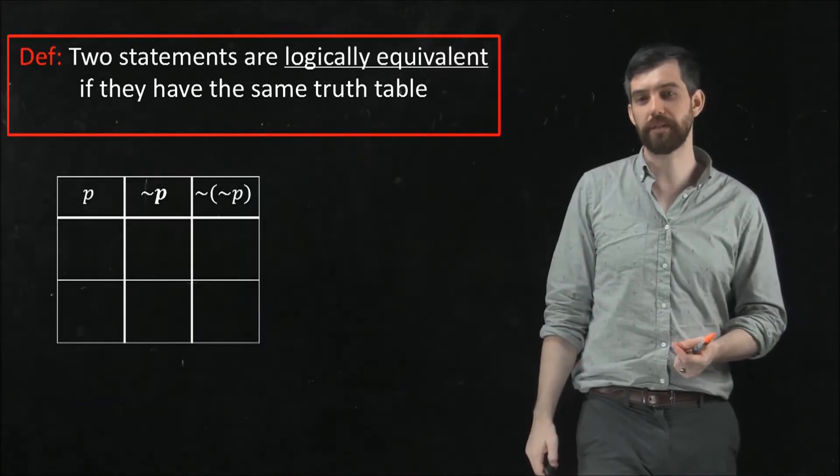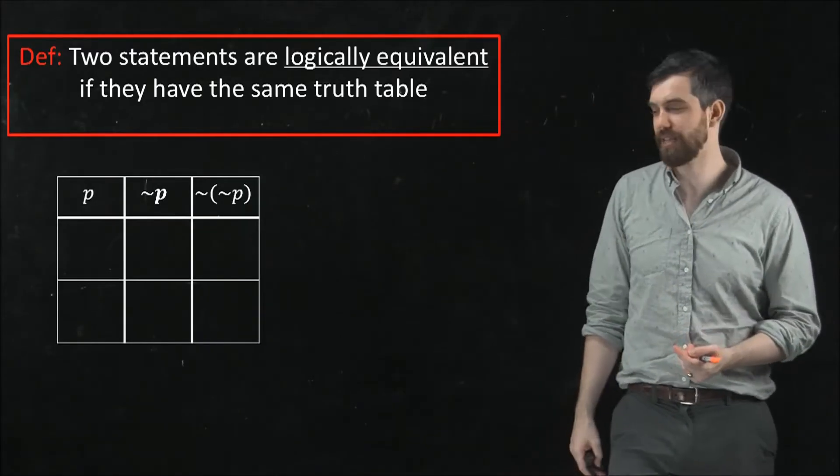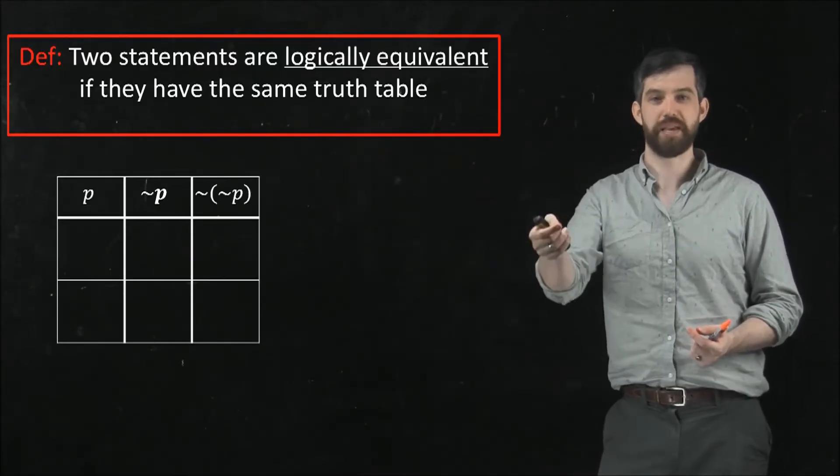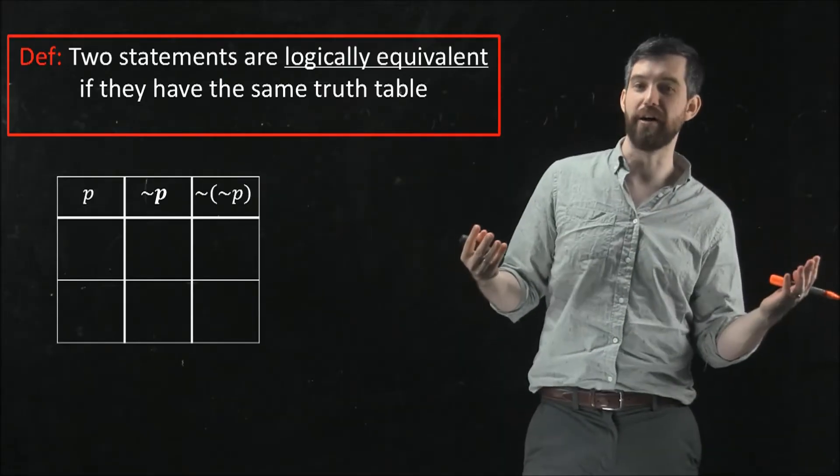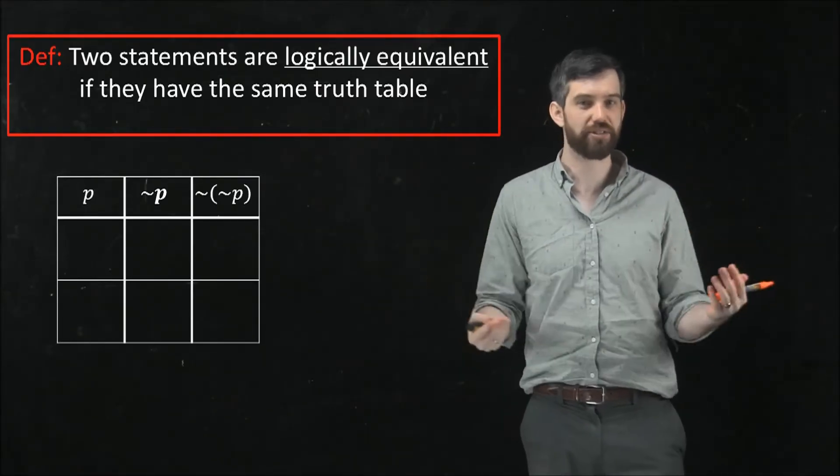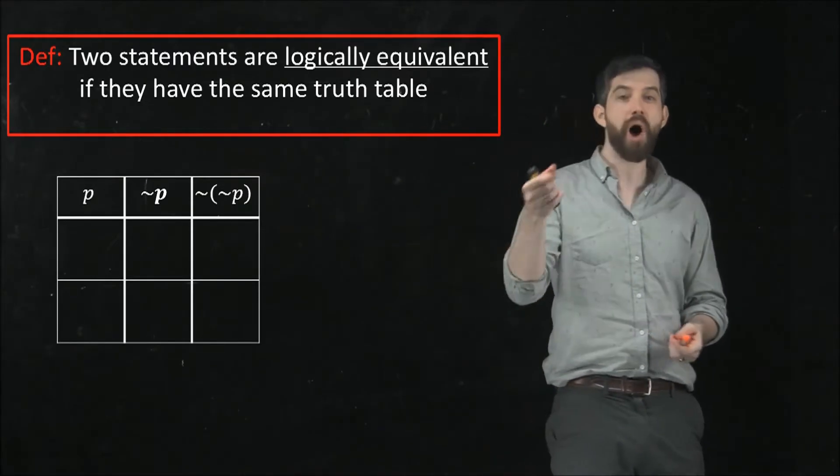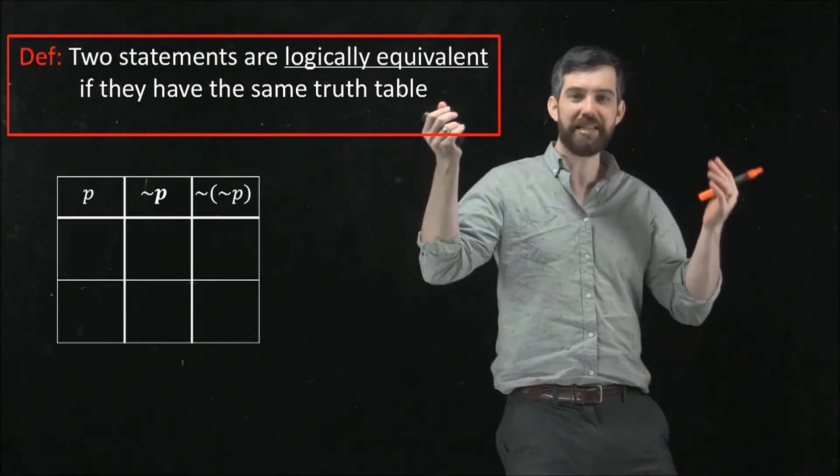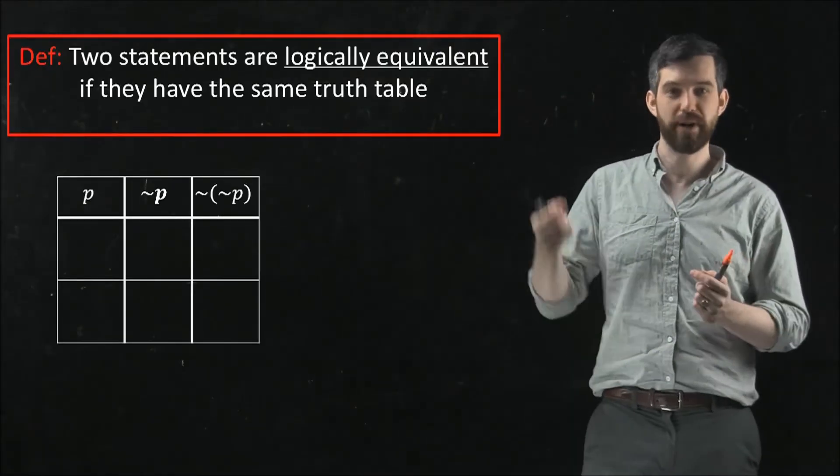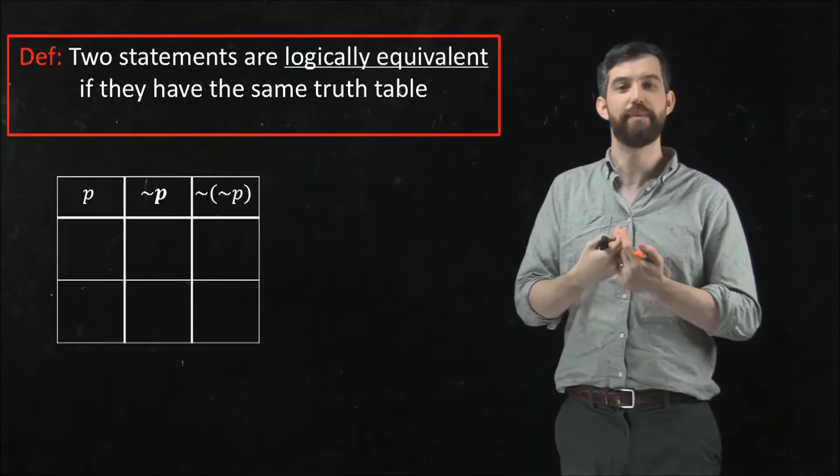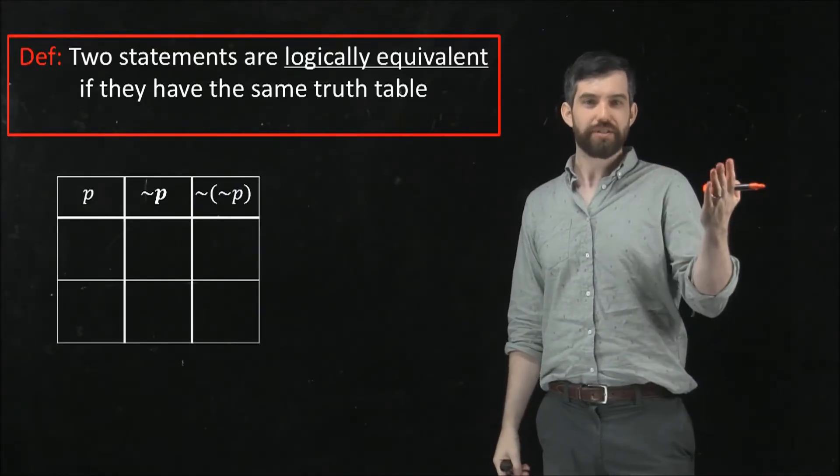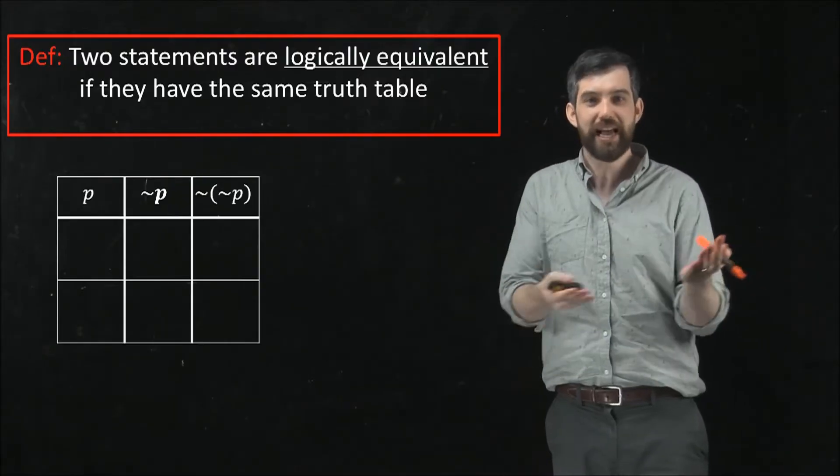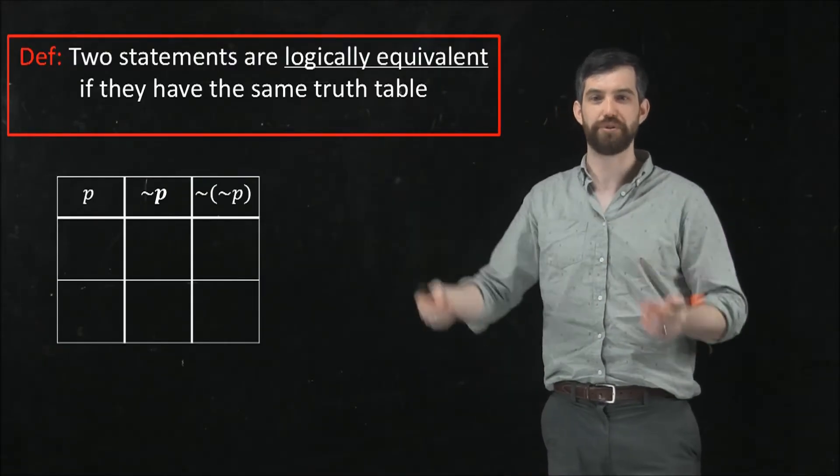Here's a simple example. I want you to look at the statement not not p. And we know that this idea of a double negative is that a double negative in English sort of cancels, right? If I say that I am not not hungry, then that's me saying that I'm hungry. If I put a double negative in, you can sort of imagine it cancelling.